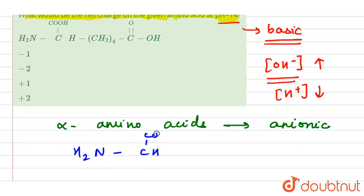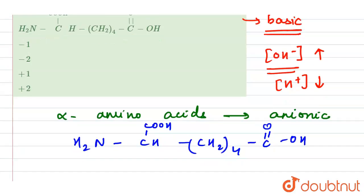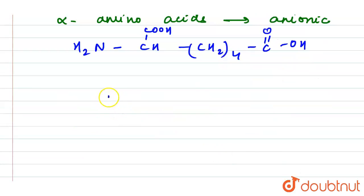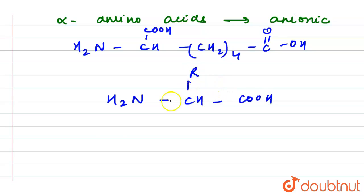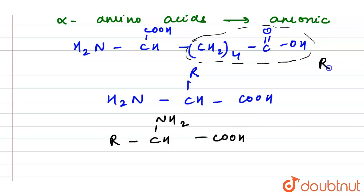The given amino acid is H₂N-CH(COOH)-(CH₂)₄-COOH. The general structure of an amino acid is: NH₂-CH(R)-COOH, where R is the side chain. Here, the -(CH₂)₄-COOH part represents the R side chain, and the H₂N-CH-COOH portion is the main general structure of the amino acid.